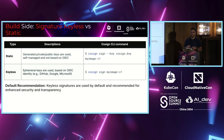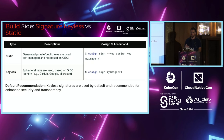In static mode you are responsible for protecting the private key and ensuring it doesn't leak. For better security, the recommended approach is keyless mode, where you sign artifacts based on an OIDC identity — for example, a GitHub, Google, or Microsoft account. Keyless mode uses ephemeral certificates, making it significantly more secure.